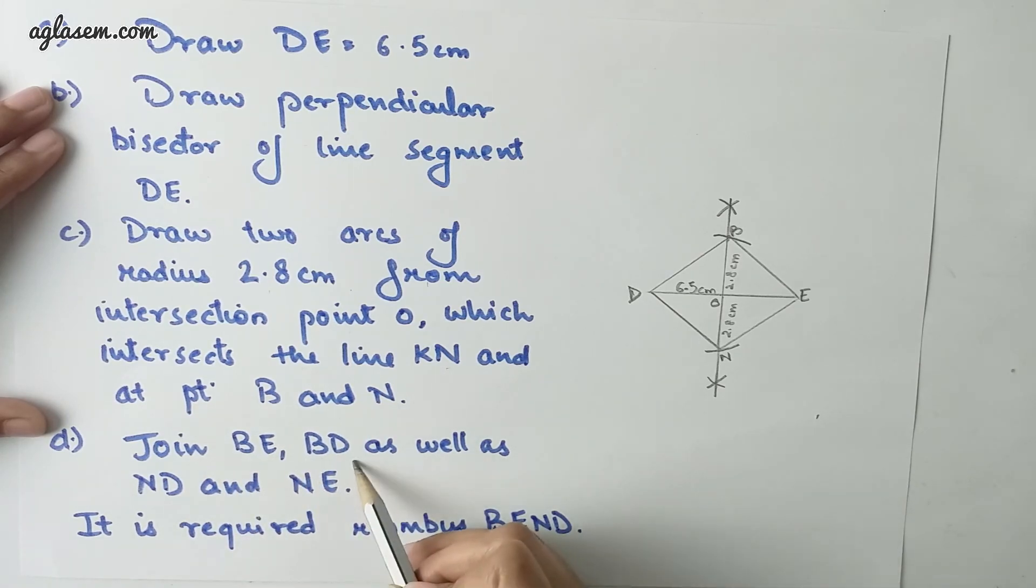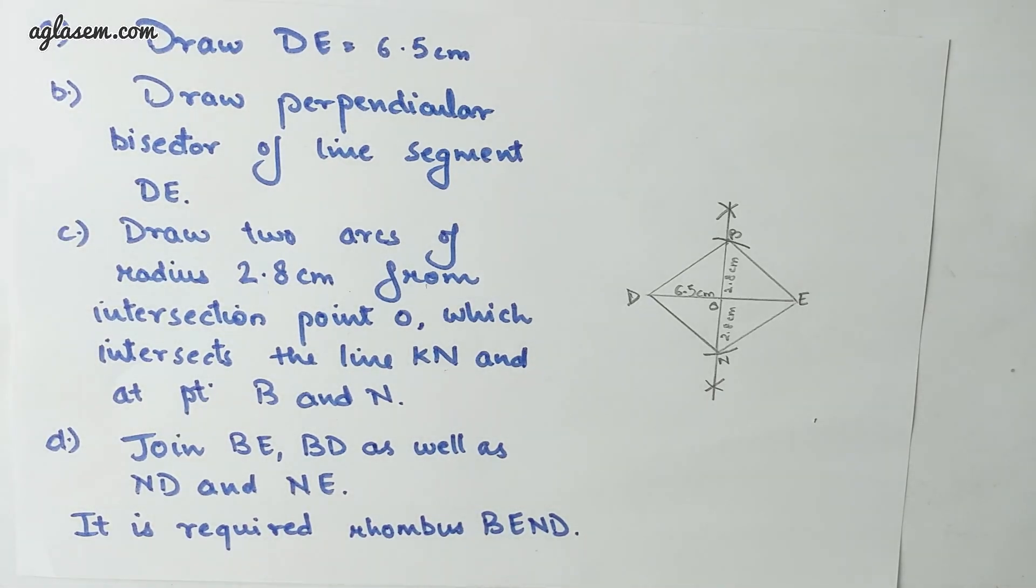Join BE, BD as well as ND and NE. It is the required rhombus BEND. So this is all from our side. For more such informative videos, subscribe our channel. Thank you.